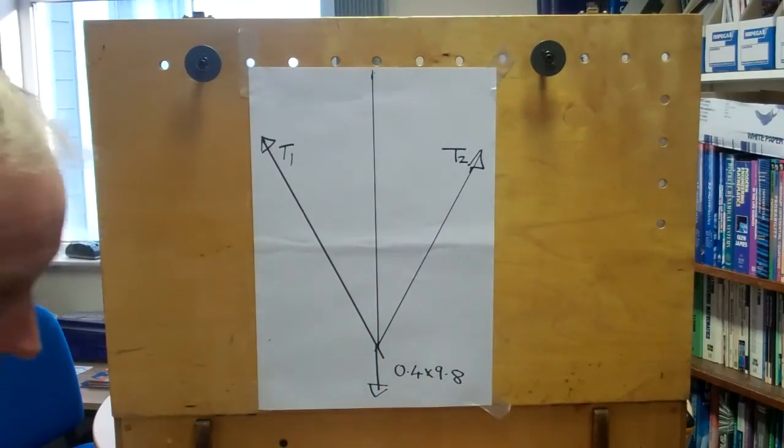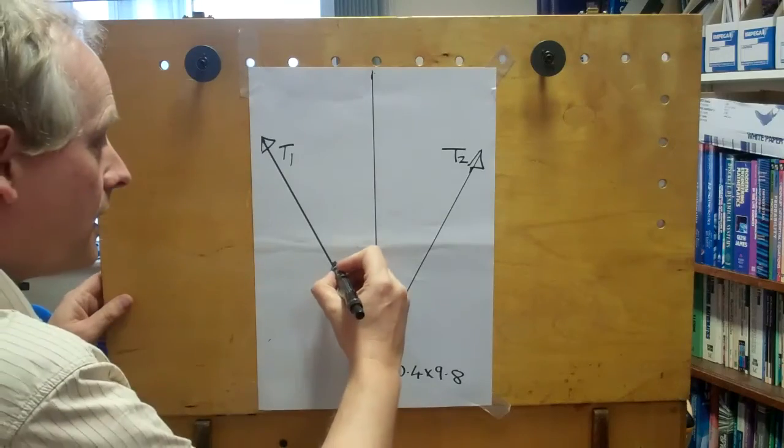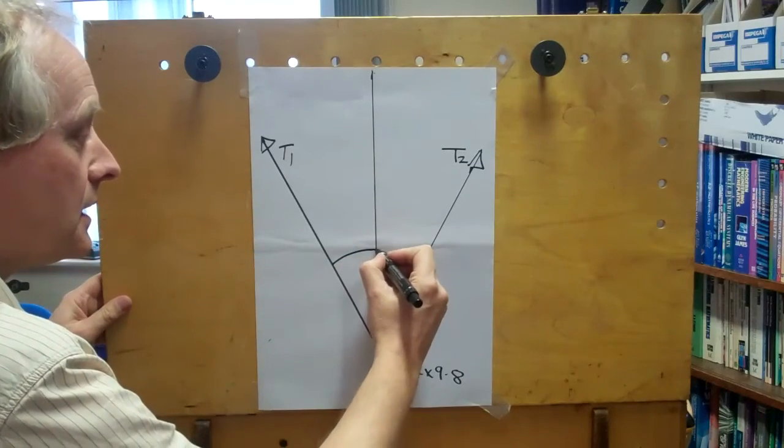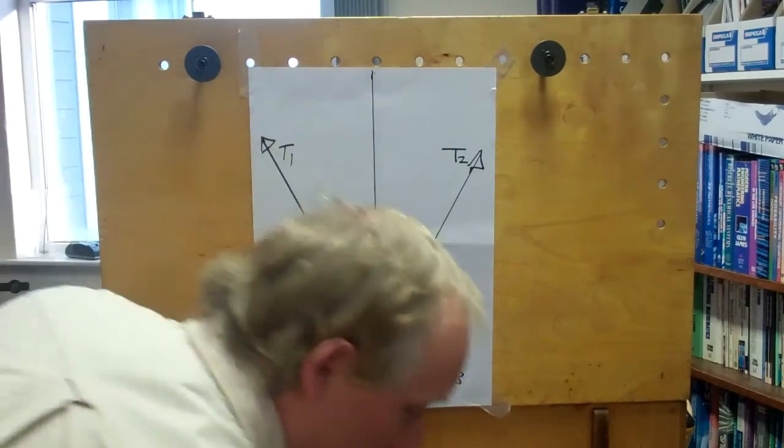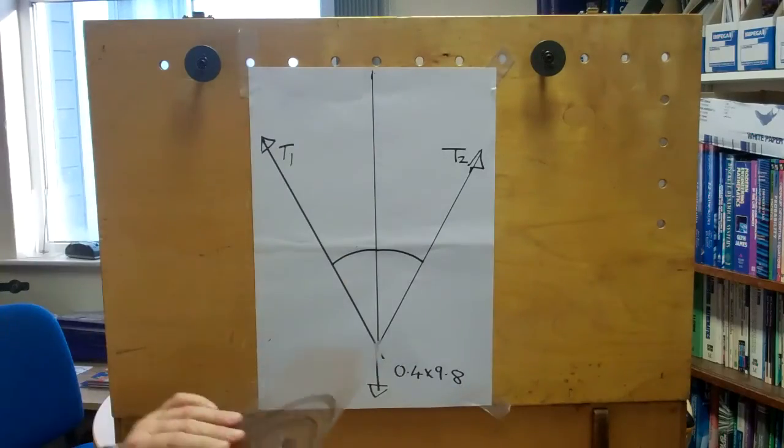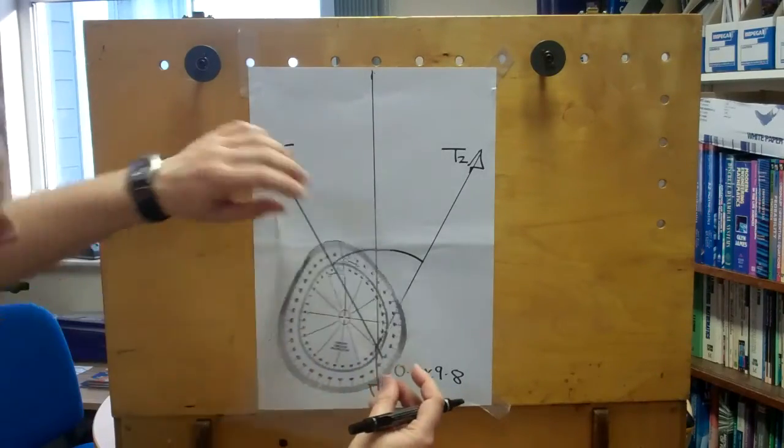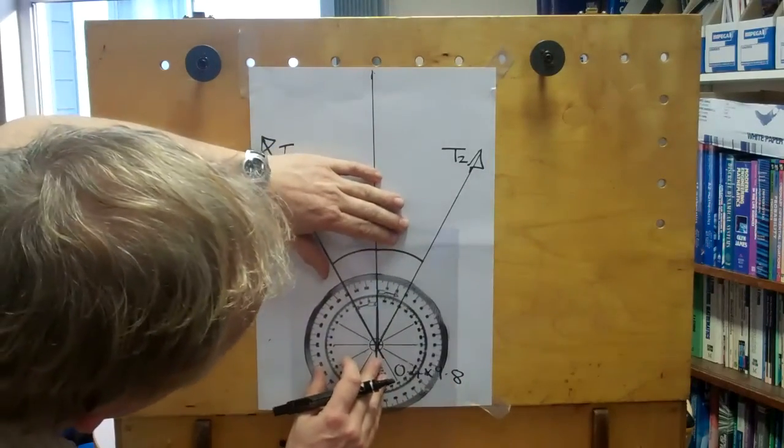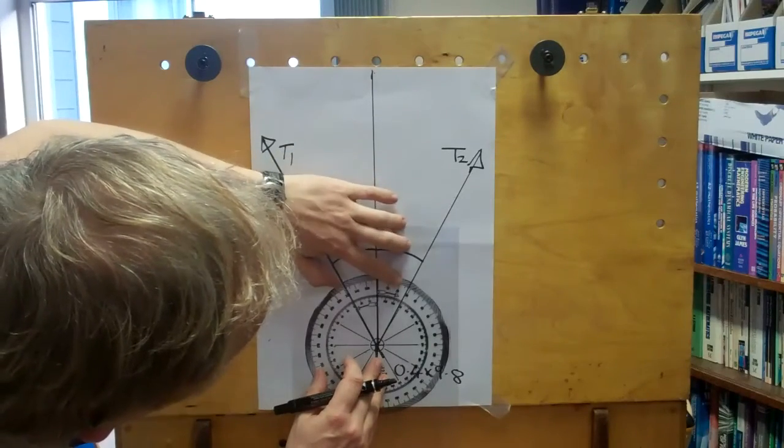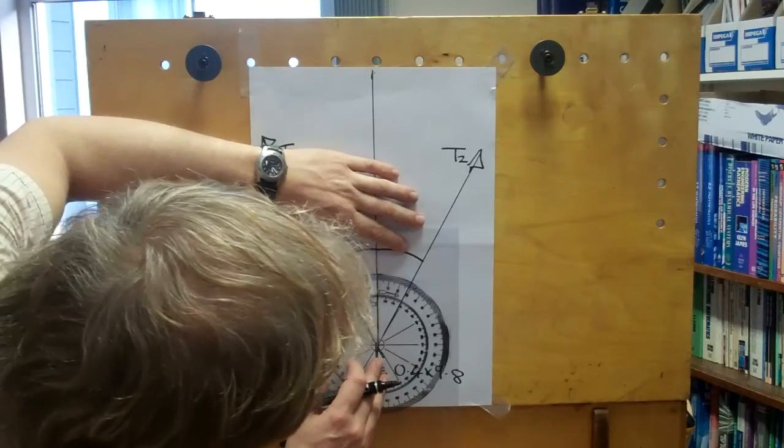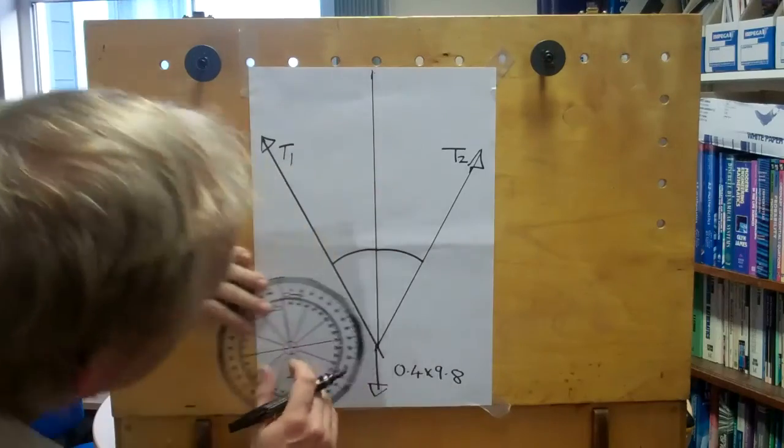And then with the protractor I can measure this angle and this angle here. So lining this up carefully on that side, first of all we've got an angle to the vertical of 27 degrees.